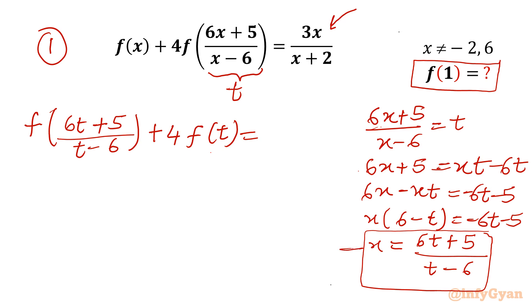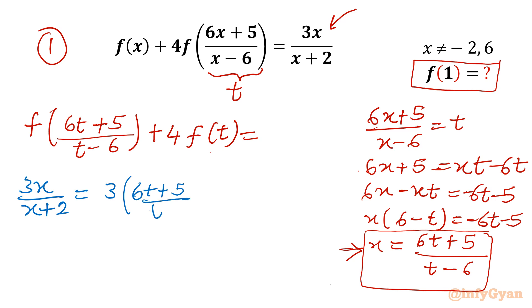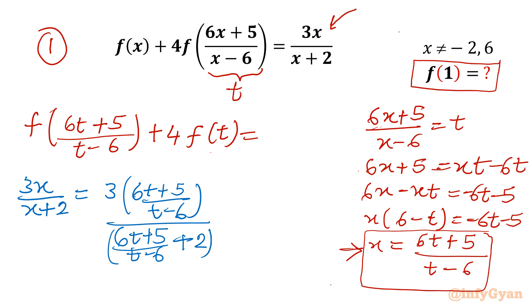Let me calculate the RHS separately. We have 3x/(x+2) = 3·(6t+5)/(t-6) divided by [(6t+5)/(t-6) + 2]. Taking LCM in the denominator, the numerator's denominator cancels, leaving 3(6t+5) in the numerator.